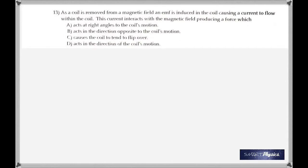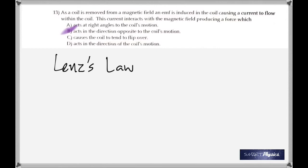As a coil is removed from a magnetic field, an EMF is induced in the coil, causing a current to flow within the coil. This current interacts with the magnetic field, producing a force. By Lenz's law, it should always oppose — so it acts in a direction opposite to the coil's motion.